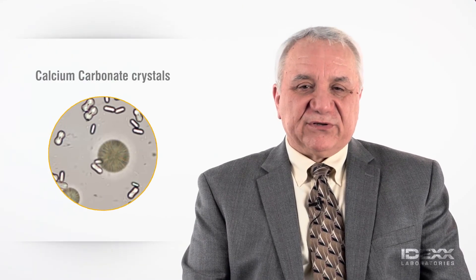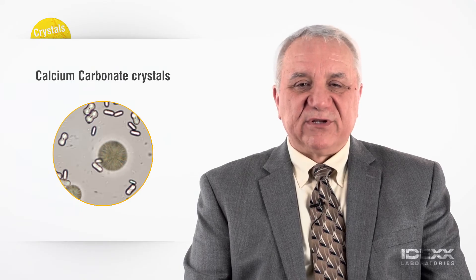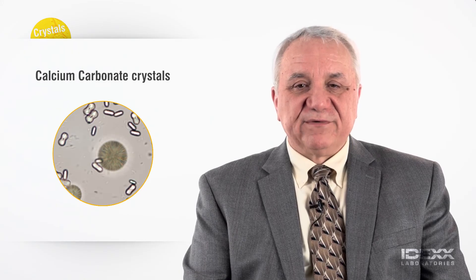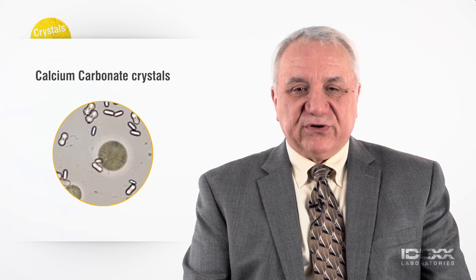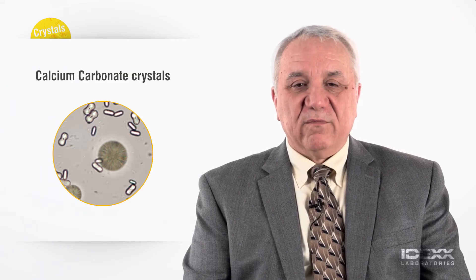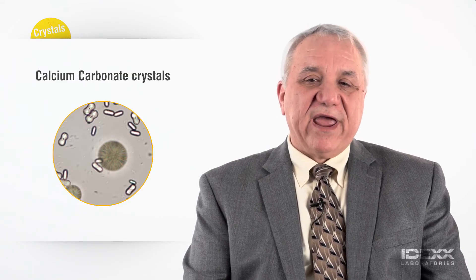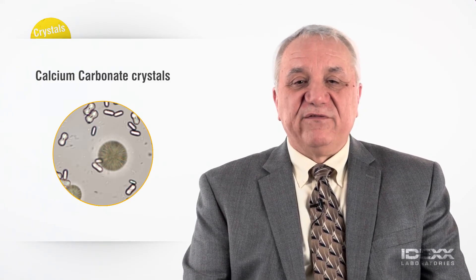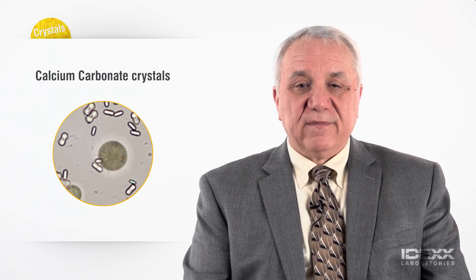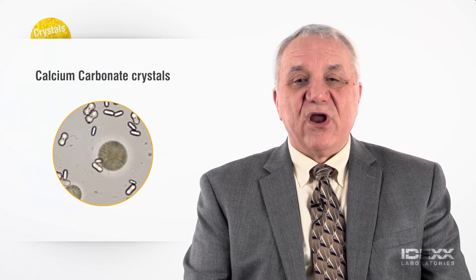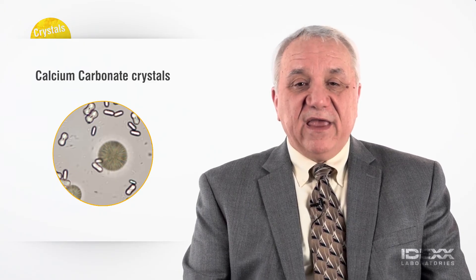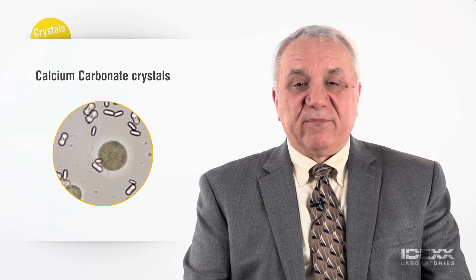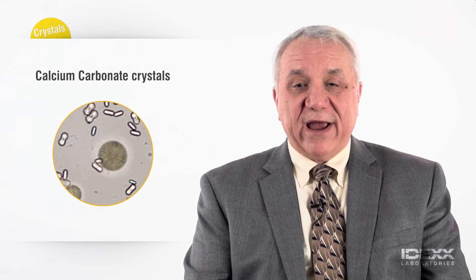Calcium carbonate crystals are commonly seen in horse and rabbit urine specimens. They are present in alkaline urine and typically demonstrate no clinical significance. They are typically small, colorless crystals that are present in dumbbell or spherical forms with potential internal striations, and in most cases a wide range of morphologic presentations are seen relative to different stages of formation. Calcium carbonate crystals are not described in dog and cat urine specimens. If similar shaped crystals are found in dog or cat urine, they are more likely to be representative of a form of calcium oxalate monohydrate crystals.